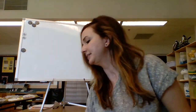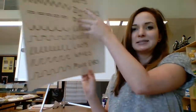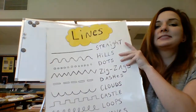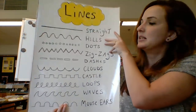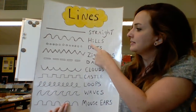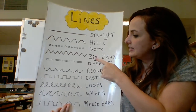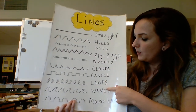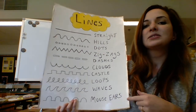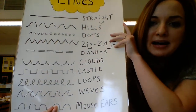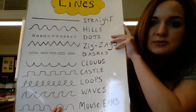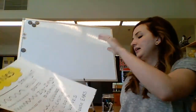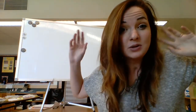Let's go over some of our lines. I know you've seen this poster hanging in my room before — this is my example of just some of the many different lines in the world. You have straight lines, hills, dots, zigzags, dash lines, clouds, castle, loops, waves, mouse ears — all sorts of different fun, awesome lines that you can use in your artwork. There are so many more out there; the more you draw, the more kinds of lines you will find.